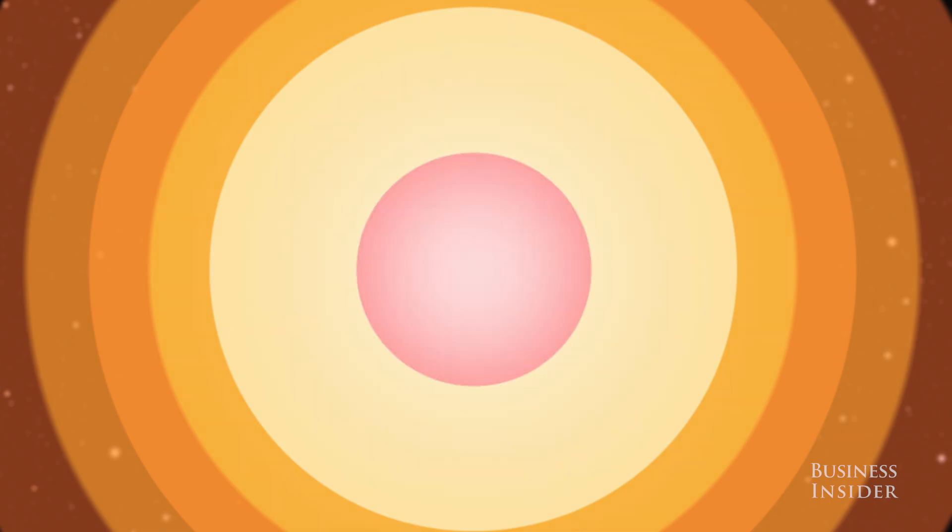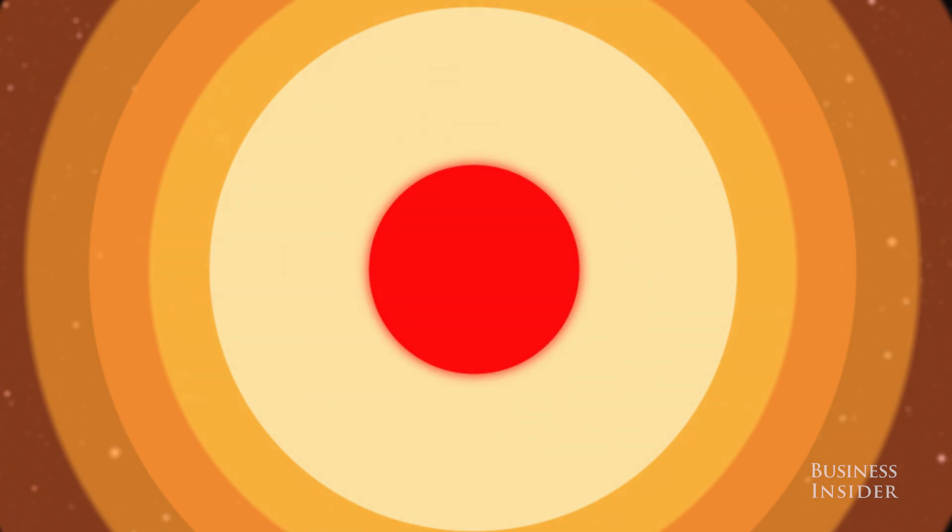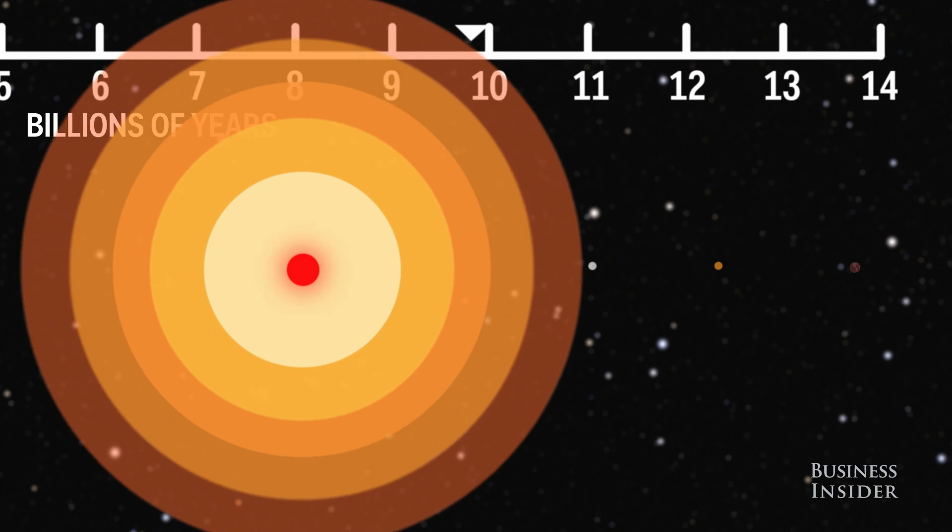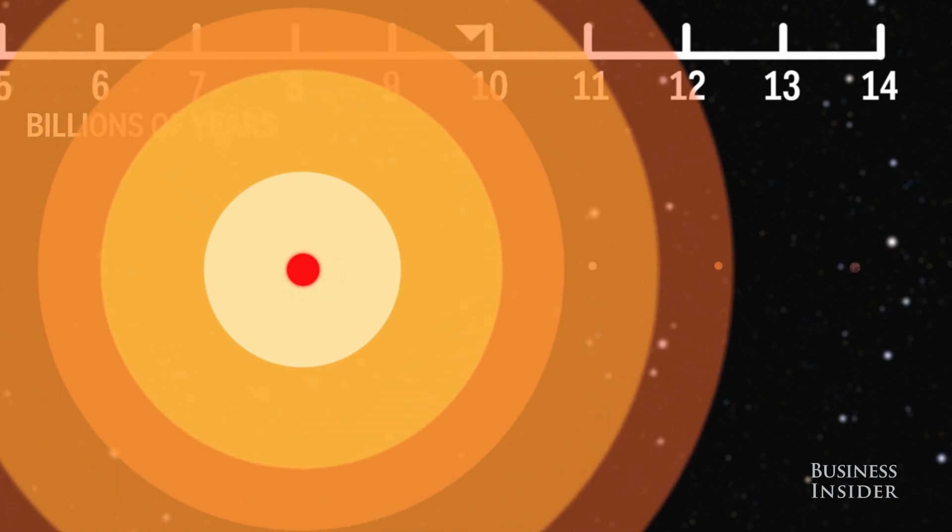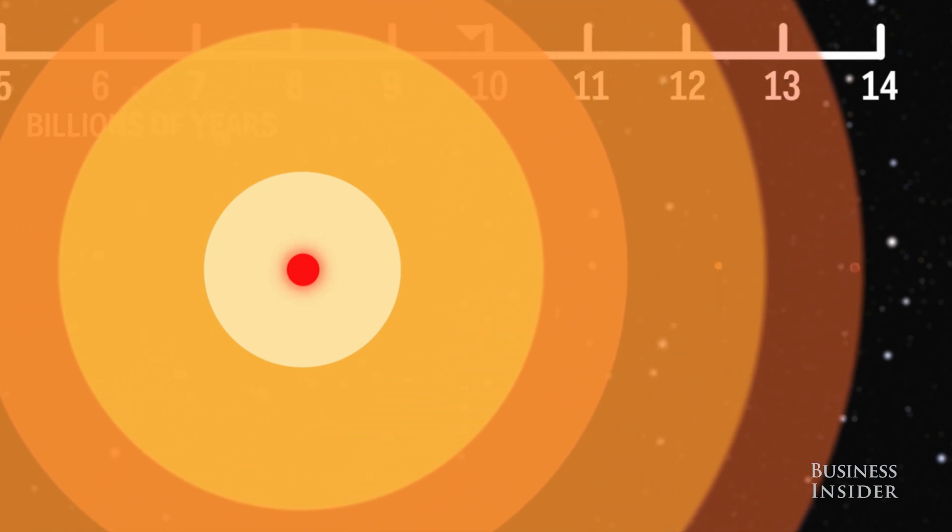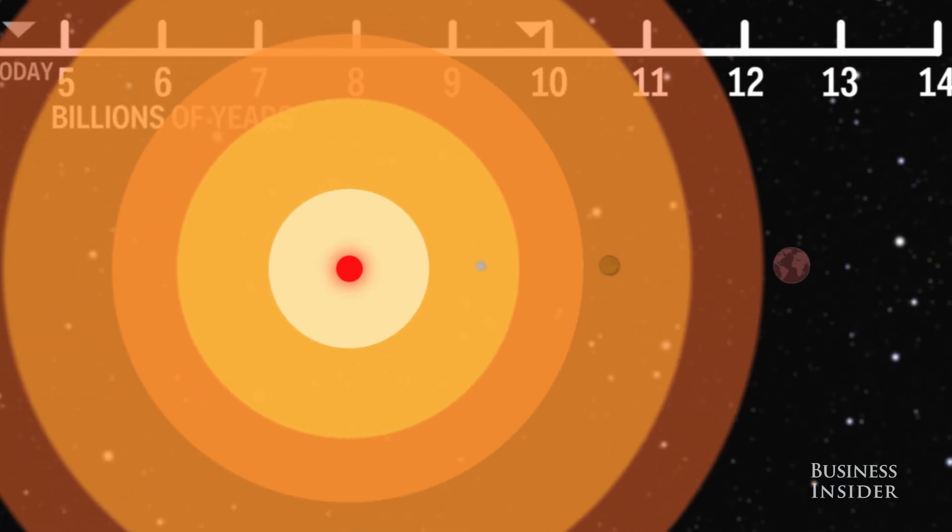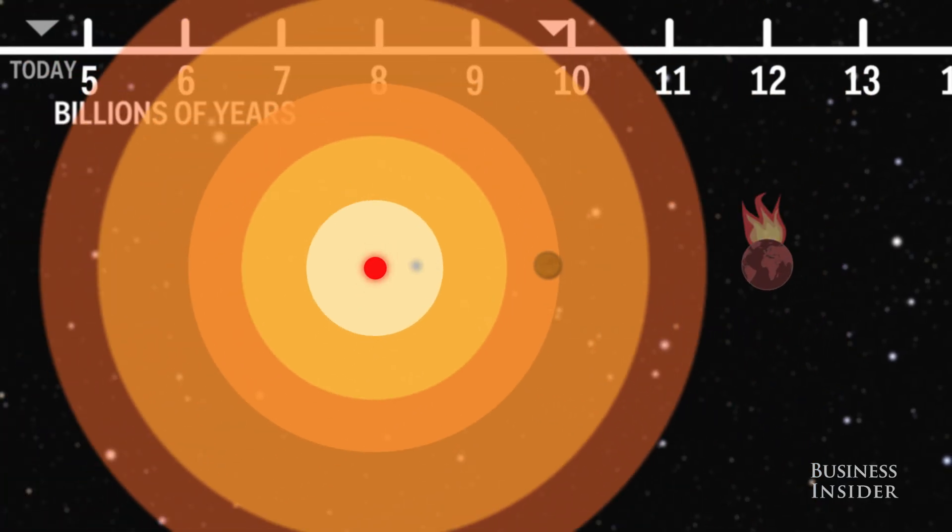The core will heat up and get extremely dense, but the Sun's outer layer will expand a lot. It could expand big enough to swallow Mercury, Venus, and maybe even Earth. Even if it doesn't grow as far as the Earth, high temperatures will completely burn our planet.